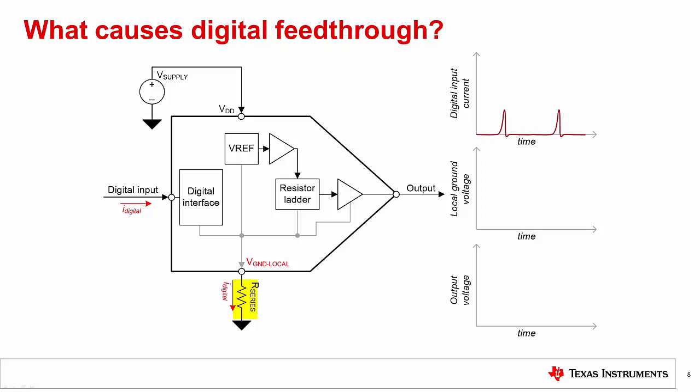This series resistance, shown as R_series, can create a slightly higher potential for the local ground level, shown as V_ground_local, depending on the current flowing through it. During operation, digital inputs can have short periods of higher input current during an edge transition of the digital line. That current, shown as I_digital, must flow to ground and will use the path provided by R_series. When we look at the current transients from the digital input, we should see a corresponding potential change on V_ground_local. The issue is that the reference voltage and resistor ladder ground — sometimes referenced as V_ref_minus or V_ref_negative — now has the same glitch, which will be reflected in the output. Some devices have a separate digital ground pin and analog ground pin, which helps reduce this issue, but even in those devices, poor PCB layout can still allow digital feed-through to occur.